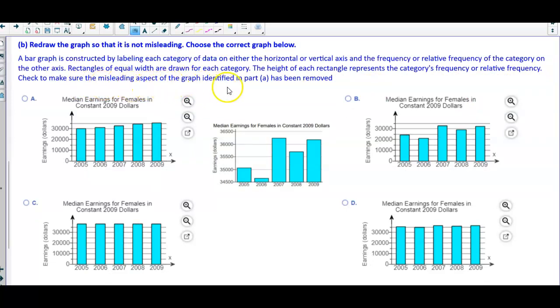We're going to check to make sure the misleading aspect of the graph, which is identified in part A, has been removed.